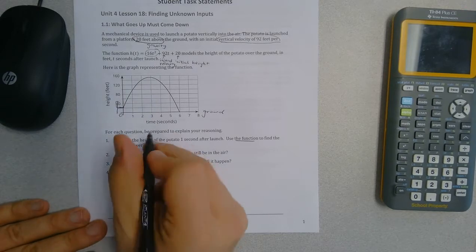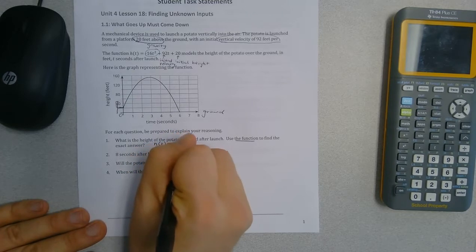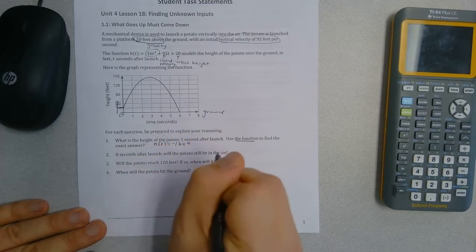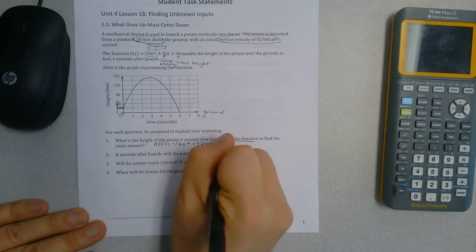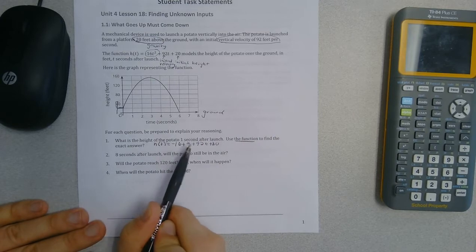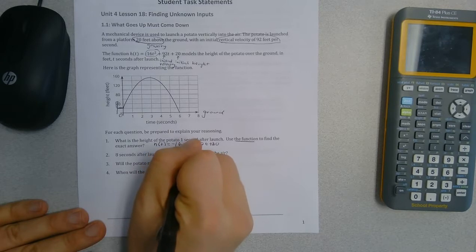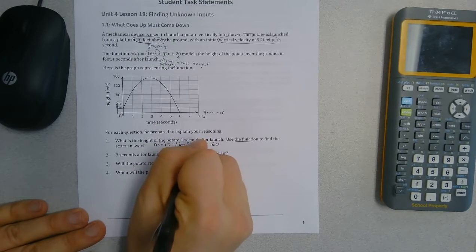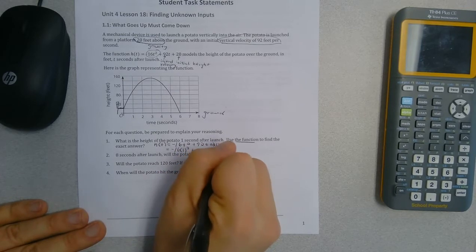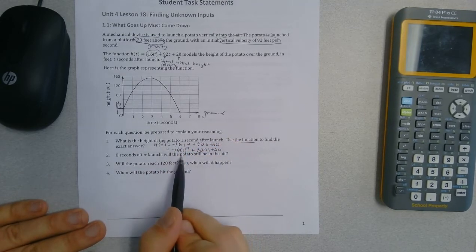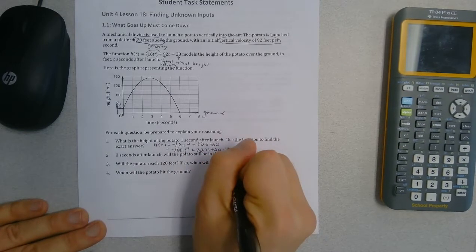So let's use our function. So I'm going to write the function down. h(t) equals negative 16t squared plus 92t plus 20. And then I'm going to plug in 1 for t. So this equals negative 16 times 1 squared plus 92 times 1 plus 20. Now, 1 squared is 1, and negative 16 times 1 is negative 16.